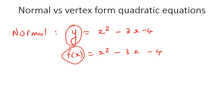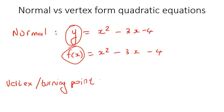Then you get the vertex method, which some teachers even call the turning point form. What that looks like is y equals, and then there's usually a number in the front sometimes, and then you would have something like x minus 1 squared plus 4.